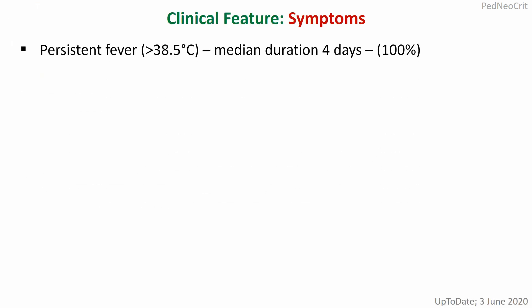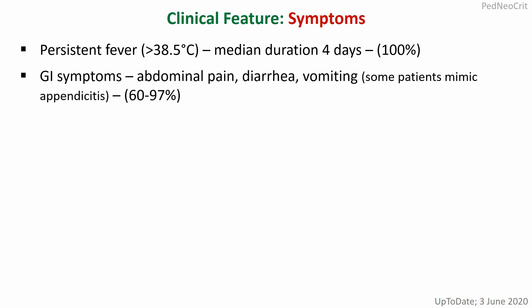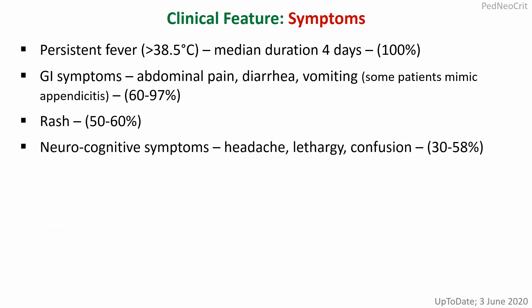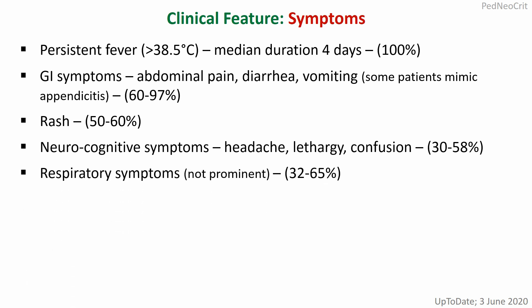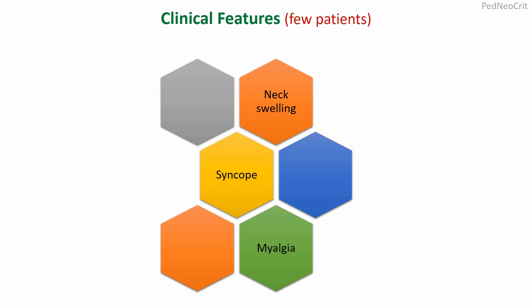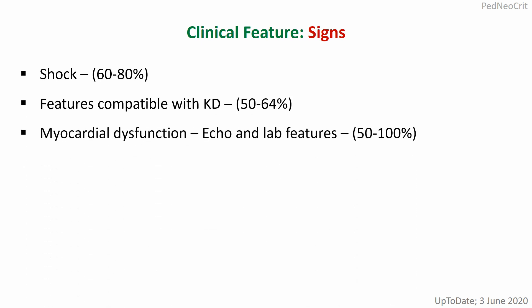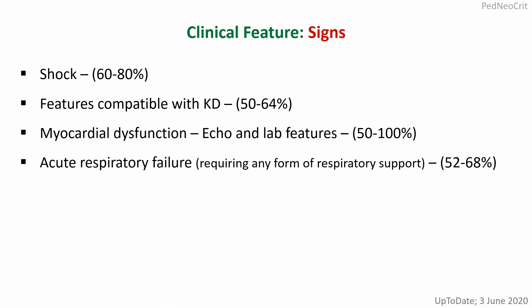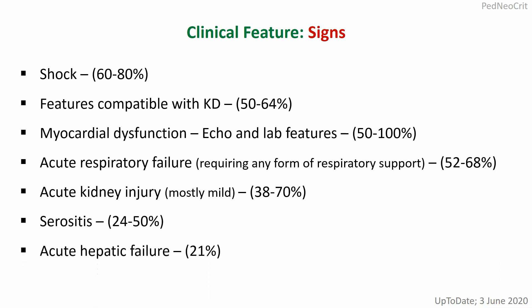Common symptoms include persistent fever, GI symptoms — abdominal pain, diarrhea, vomiting — rash, neurocognitive symptoms including headache, lethargy, and confusion. Respiratory symptoms are less prominent. Also: conjunctivitis, mucous membrane involvement, sore throat, swollen hand and foot, neck swelling, myalgia, or syncope. Common signs include shock in as high as 60 to 80 percent of patients, features compatible with Kawasaki disease, myocardial dysfunction, acute respiratory failure requiring any form of respiratory support, acute kidney injury mostly mild, and there can be serositis or acute hepatic failure.